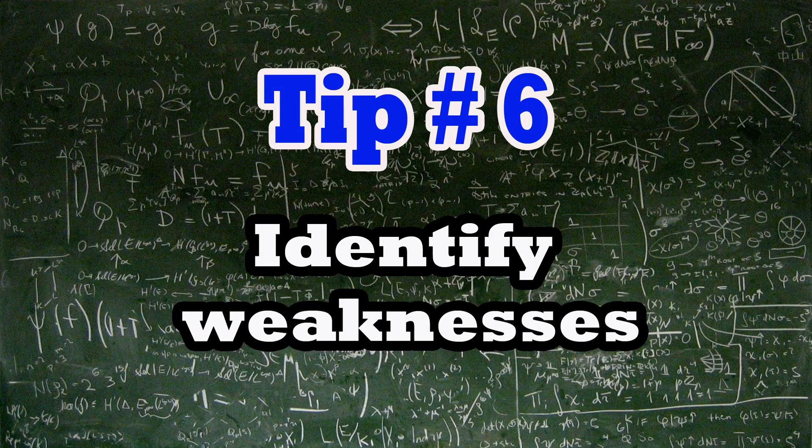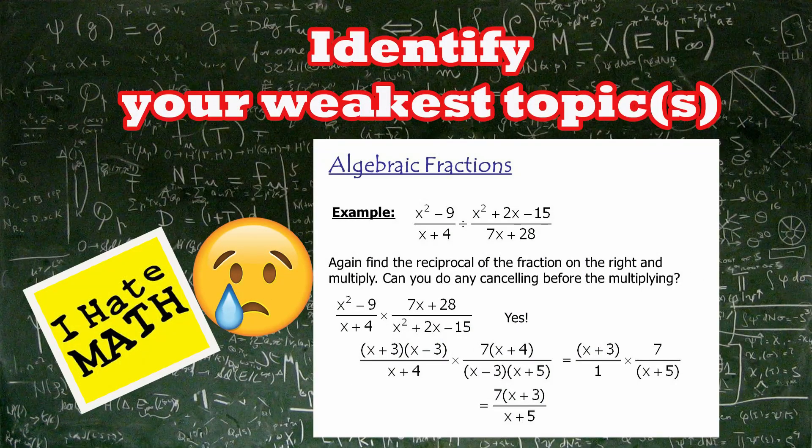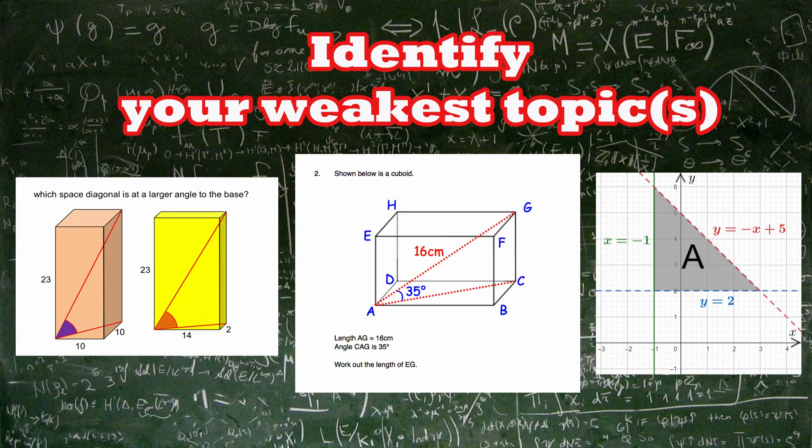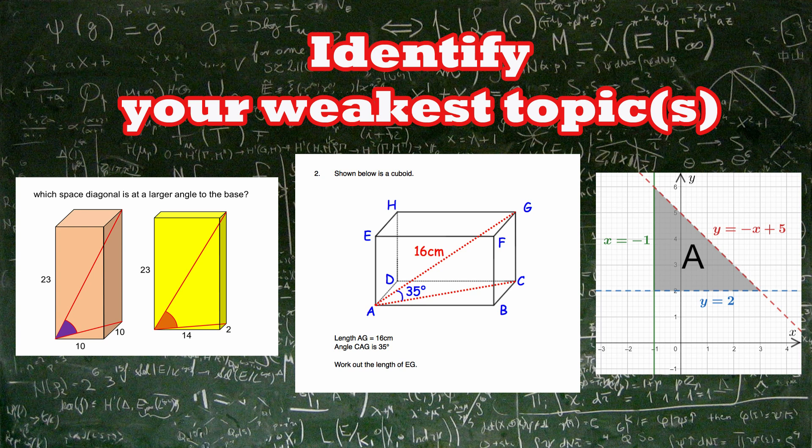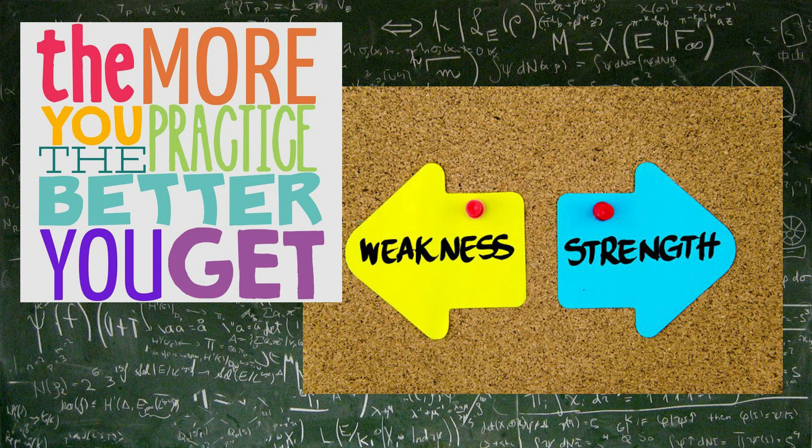Tip number 6: Identify your weakness. You may have few topics which are a little bit challenging for you. But don't hate maths only because of that few topics. First, identify the topics you need more work on. It could be anything. It could be algebraic fractions, 3D trigonometry, inequalities, shading regions etc. Then try to go through one by one and practice to get you better. We hope the upcoming videos will help you to understand the topics much better.